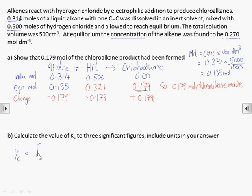The equilibrium constant Kc is given in this case by concentration of chloroalkane divided by concentrations of alkene and hydrogen chloride at equilibrium. Note that these are concentrations, not numbers of moles,